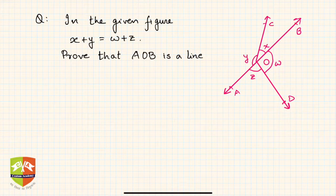Hello friends, I'm back with another question on lines and angles. In the given question, x plus y equals w plus z. You have to prove that AOB is a line.